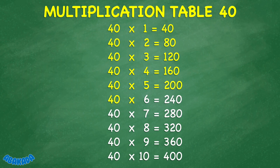40 times 6 equals 240. 40 times 7 equals 280. 40 times 8 equals 320. 40 times 9 equals 360. 40 times 10 equals 400.